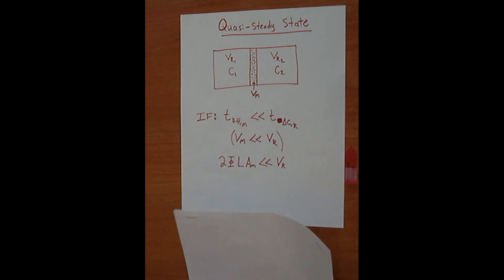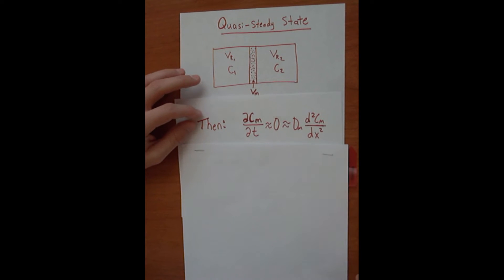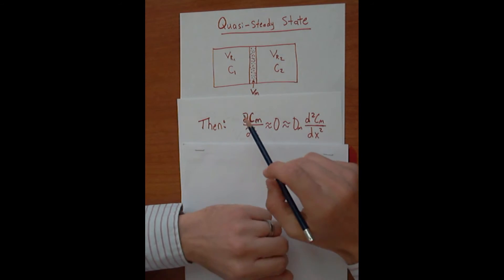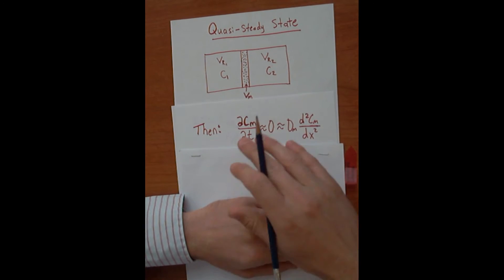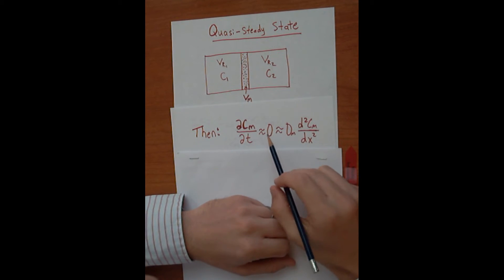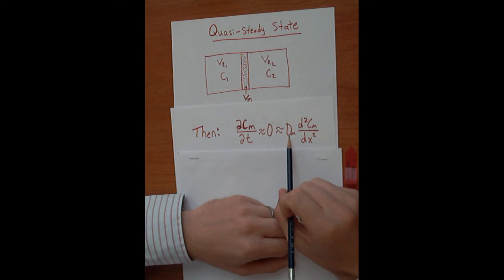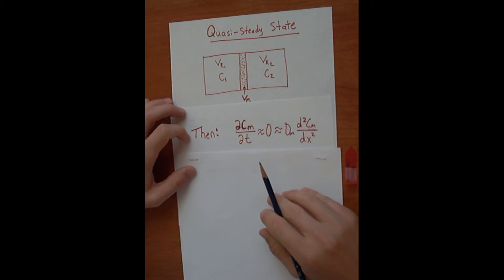If it is a quasi-steady state situation, then our equation is just like steady-state diffusion, where the change in concentration through the membrane with respect to time is going to be considered zero. Therefore, Fick's second law through the membrane is equal to zero.